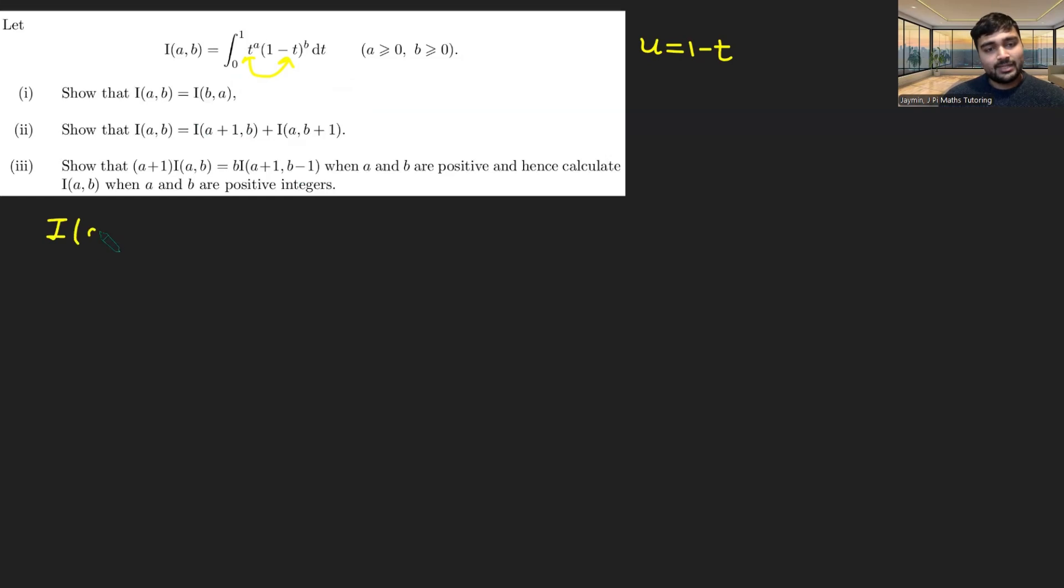It's going to be the integral from, well, the lower limit when t is 0, u is going to be 1 minus 0, which is 1. And when t is 1, u is going to be 1 minus 1, which is 0. So the limits flip around.